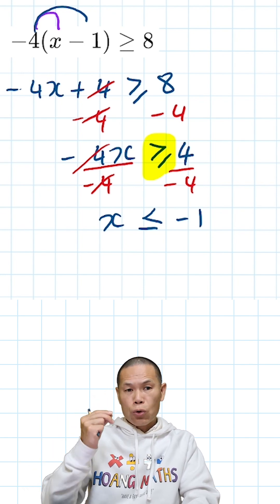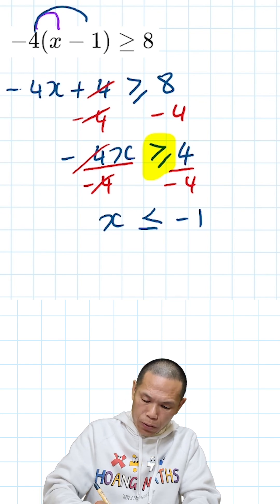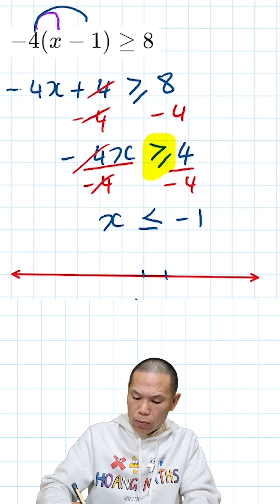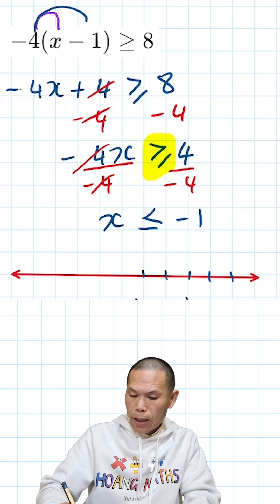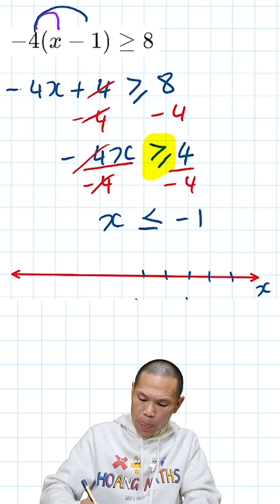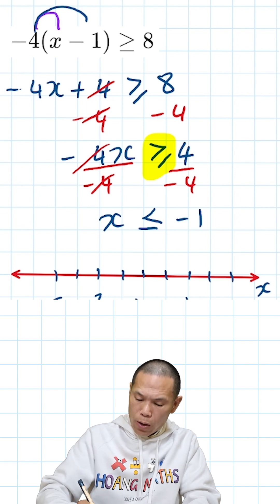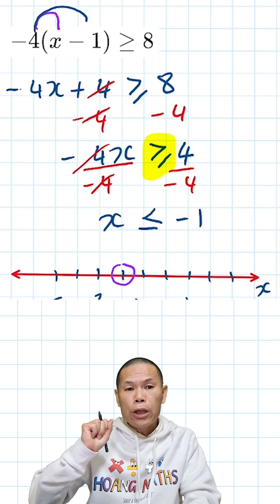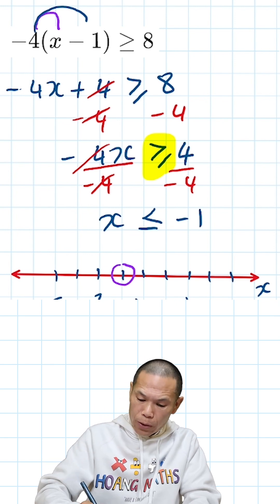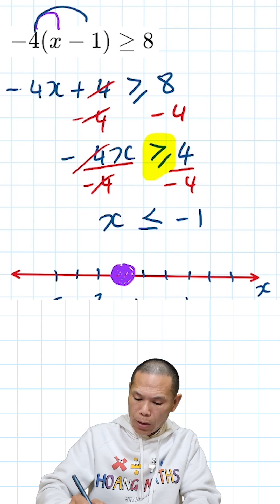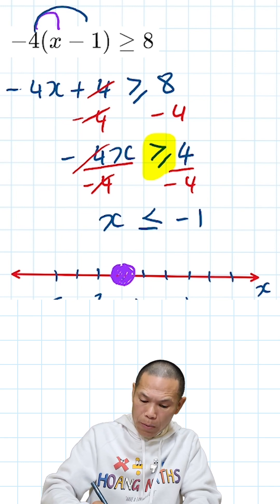Now I'll draw a number line. I start with negative 1, 0, 1, 2, 3, and this is x, negative 2, negative 3, negative 4, negative 5. I need to draw a circle on negative 1. Because x is less than or equal to negative 1, the circle must be closed, and less than means on this side.